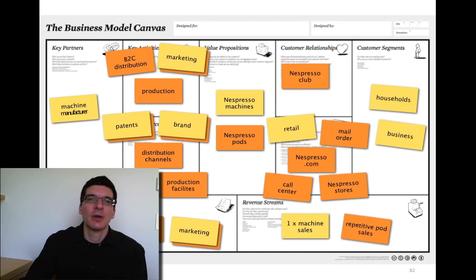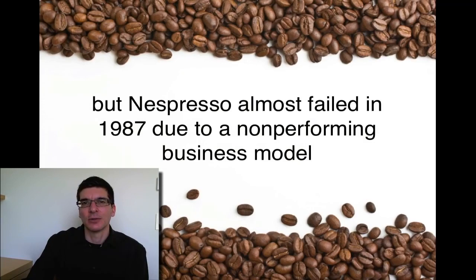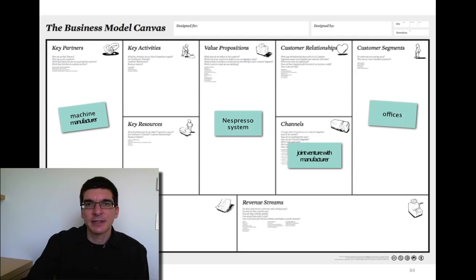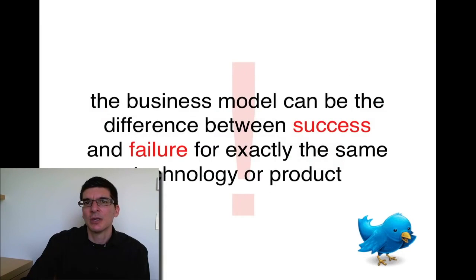Now, there's another reason why I use the Nespresso case. When they started out, Nespresso almost failed. They almost went bankrupt with exactly the same product and technology. Isn't that curious? Well, turns out that they tried in a joint venture with machine manufacturers to sell the Nespresso system through the sales force of the machine manufacturer to office buildings. And you know what? The offices weren't interested and the sales force of the machine manufacturers weren't interested either. So this business model didn't work, fell apart with exactly the same technology. So here, the difference between success and failure was not the product and technology alone. It was all the pieces of the business model in combination with a great product and technology.